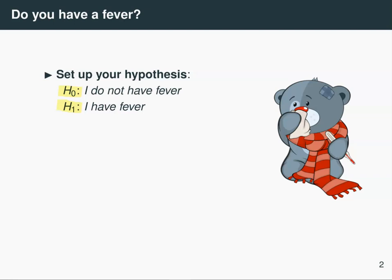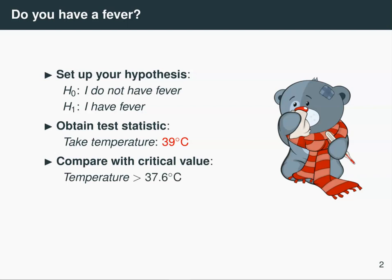Now you go out and you get a thermometer and you check your temperature. This is sort of like your test statistic, and you see that you've got a temperature of 39 degrees. Now you need to compare this with the critical value for body temperature, which is that anything above say 37.6 degrees is a fever. So you see that your temperature exceeds the critical value and you conclude that you have a fever.